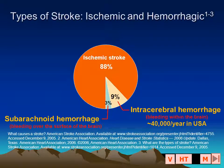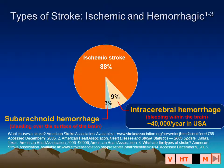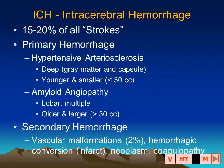Intracerebral hemorrhage is a small subset of all the lesions that are called stroke, representing between 10 and 20 percent of stroke and occurring at a rate of about 40,000 per year in the United States.